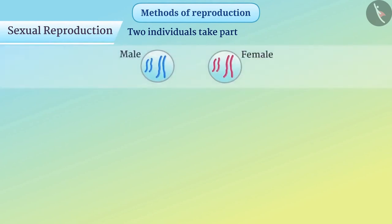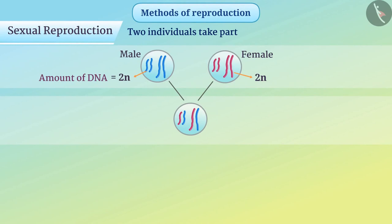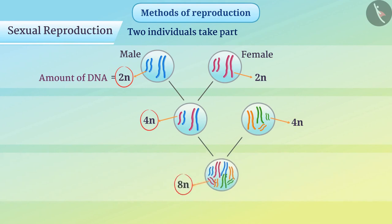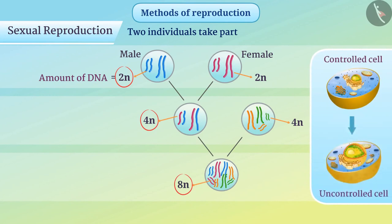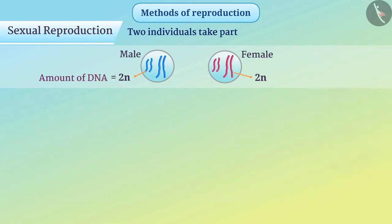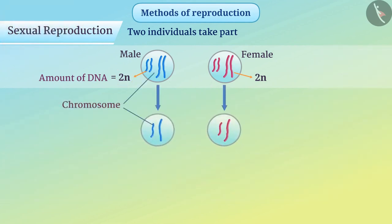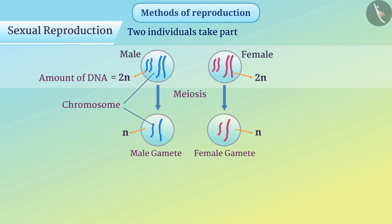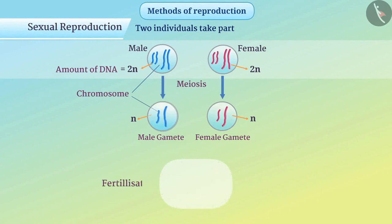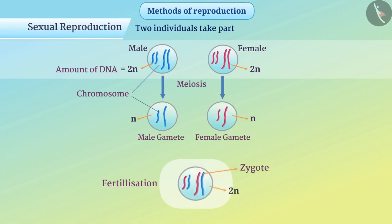If male and female both take part in sexual reproduction, then the amount of DNA that the offspring get will be twice that of the individual DNA. Therefore, the amount of DNA would go on increasing over generations. Because of this, the amount of DNA is reduced to half by the process of meiosis, producing gametes which contain half the DNA. During fertilization, the male gamete combines with the female gamete to produce a zygote, in which the amount of DNA is restored.